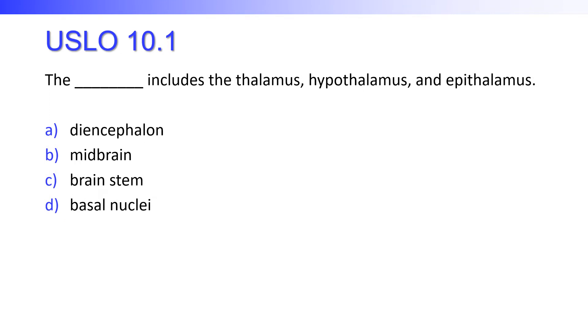This structure includes the thalamus, the hypothalamus, and the epithalamus. So the three thalamus brothers make up the diencephalon.